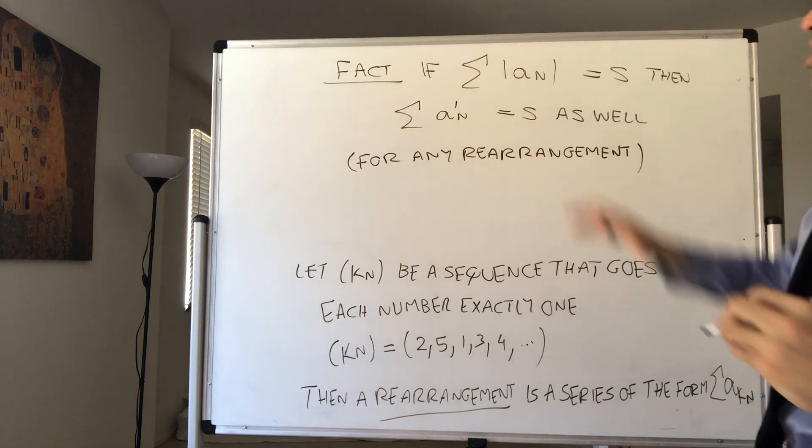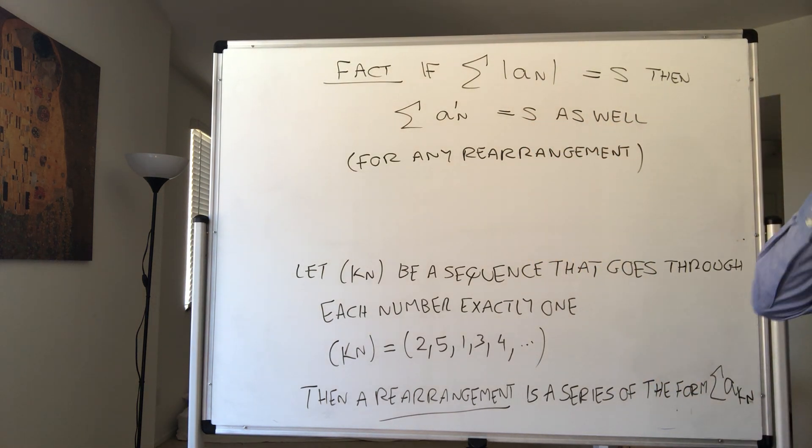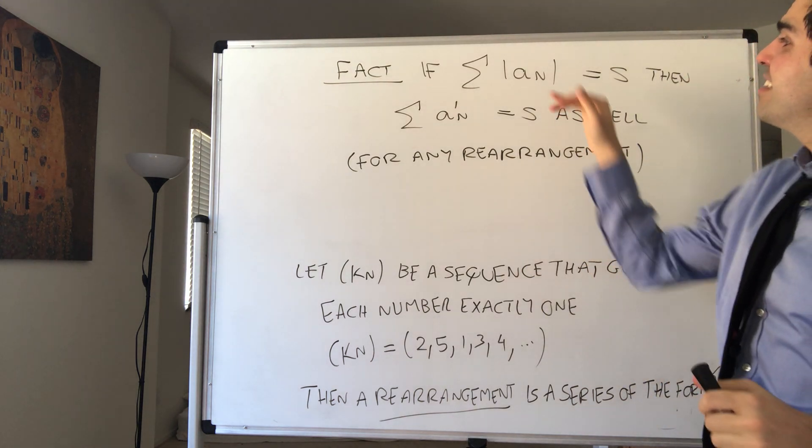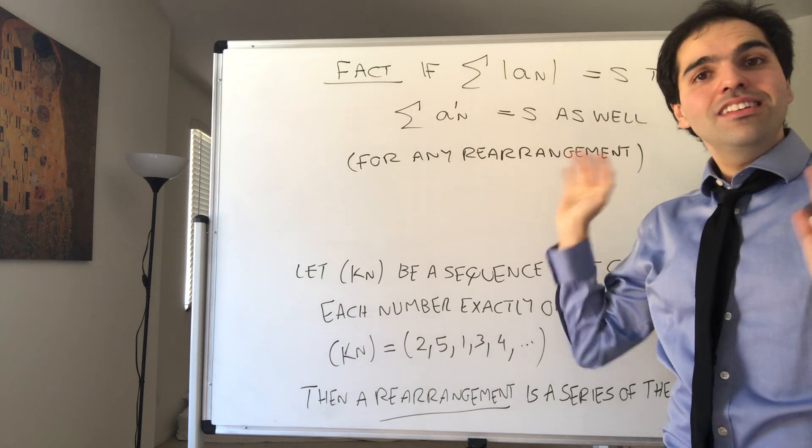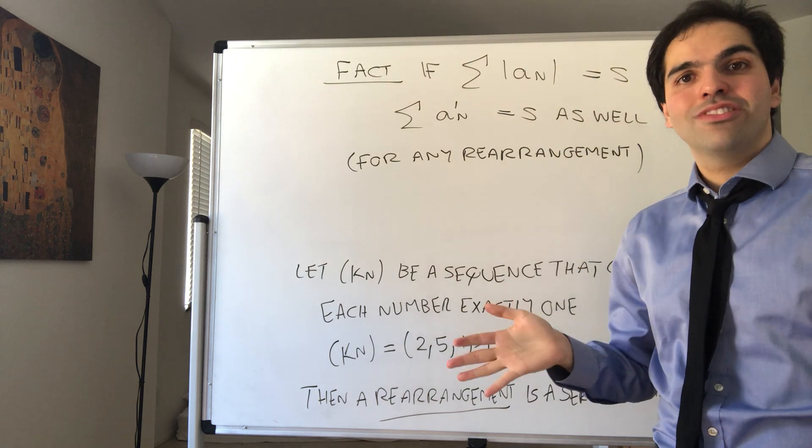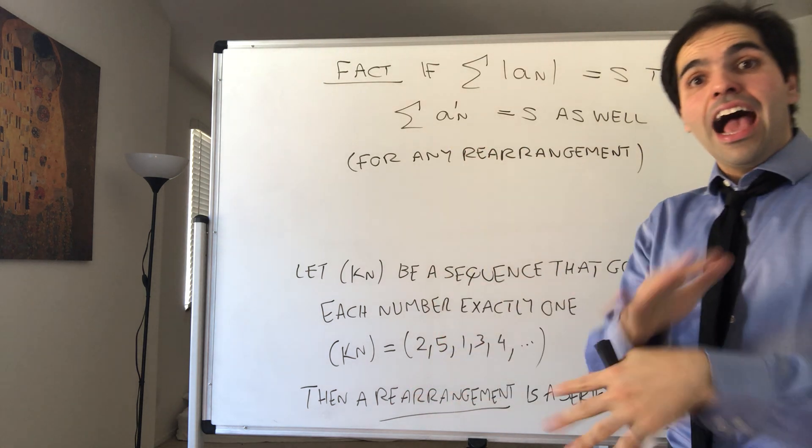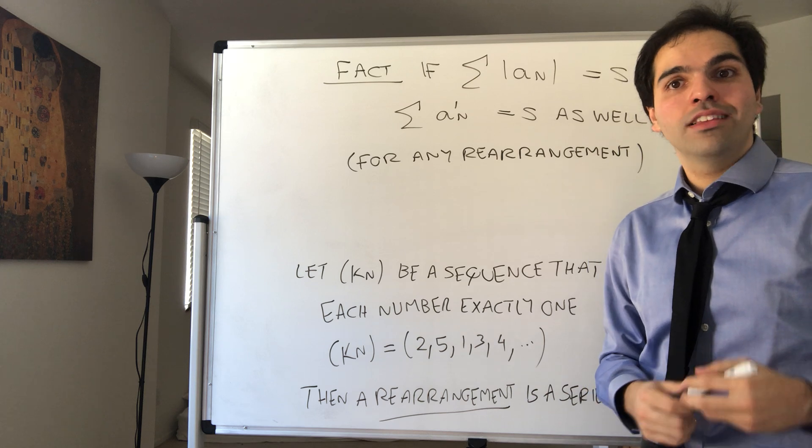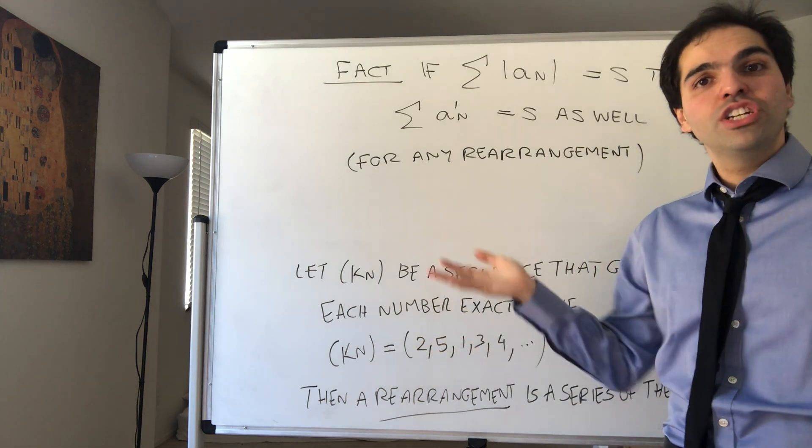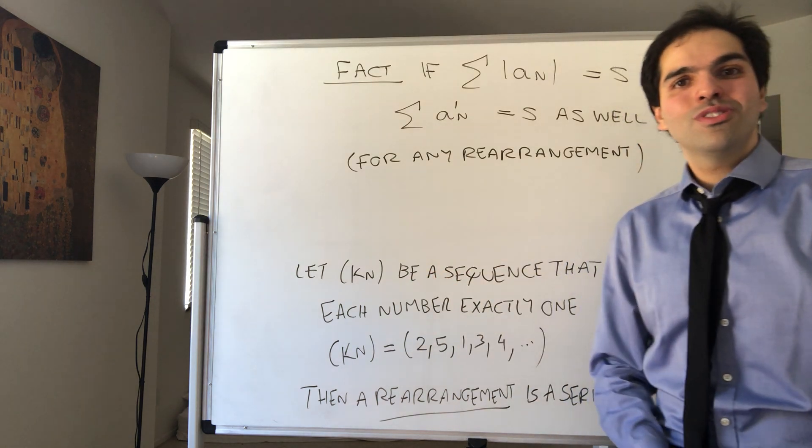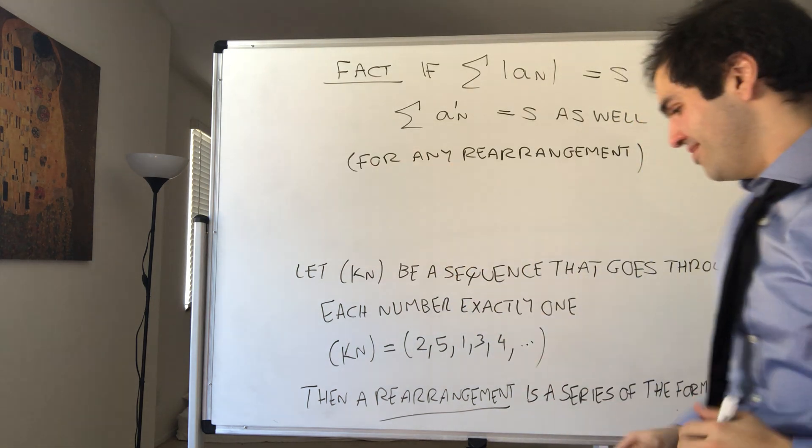We'll just prove the convergence. But there's actually an even more exciting fact. If the series converges but does not converge absolutely, then you can actually reshuffle the series to get any limit that you want. For instance, you can show there's some reshuffling that goes to 10 or 20 or minus 50. It doesn't matter.